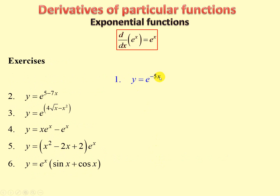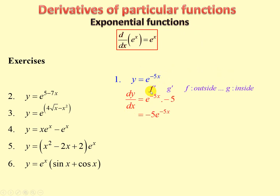Exercise 1: e to the minus 5x. This is a composite function. Outside function: e to the u. Inside function: minus 5x. So f prime leaves the minus 5x as it is, and g prime gives the derivative of minus 5x, which is minus 5. When we differentiate the outside function, e to the stays as e to the, and the inside stays the same, multiplied by minus 5.